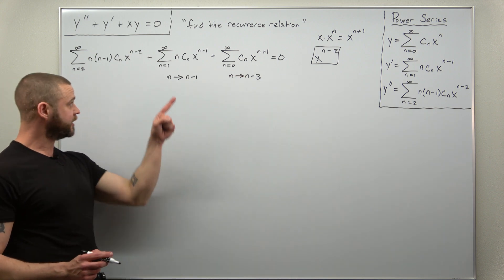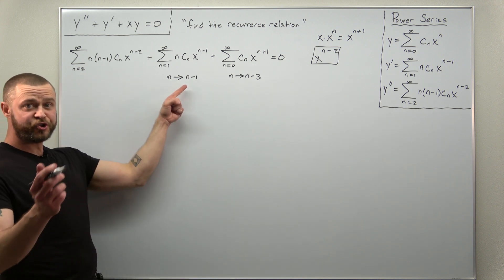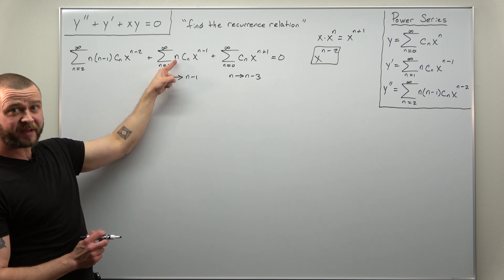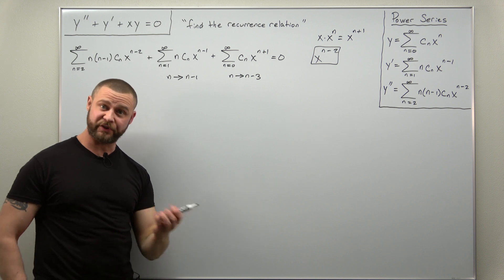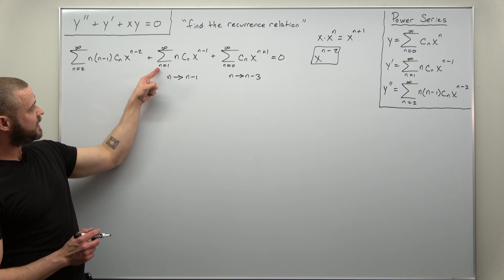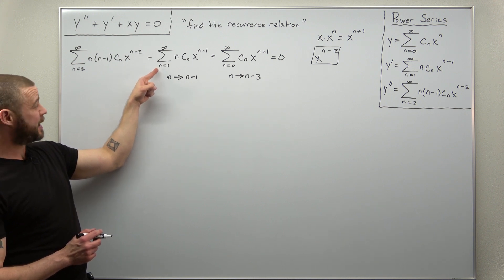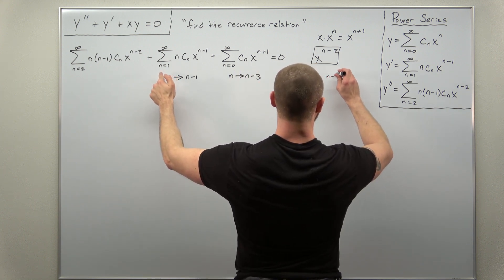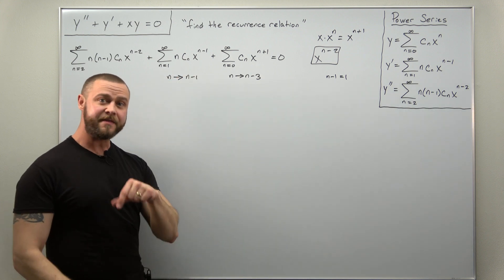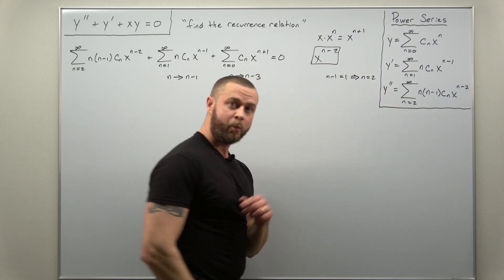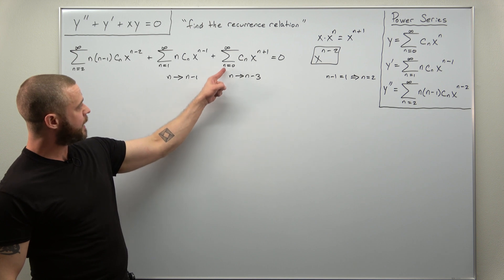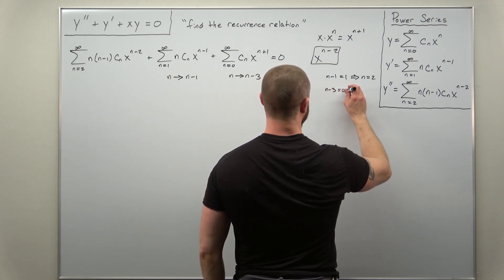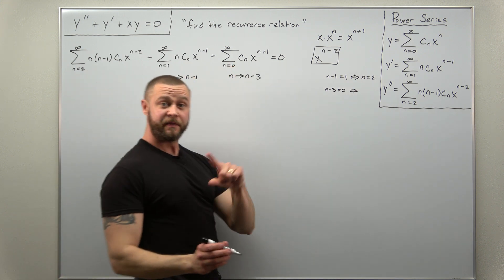We have the replacements for how to shift the indices. Always keep in mind: when you shift your indices, not only do the powers of x shift, but the subscripts of your coefficients shift, the factors of n or n minus one shift, and also your starting indices shift. For the second series, n minus one equals one gives n equals two as the new start. For the third series, n minus three equals zero gives n equals three as the new start.